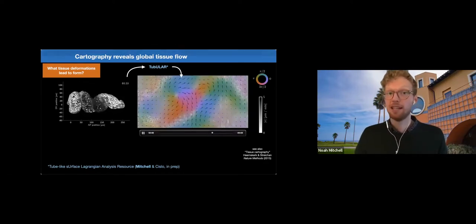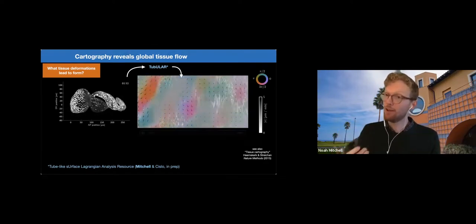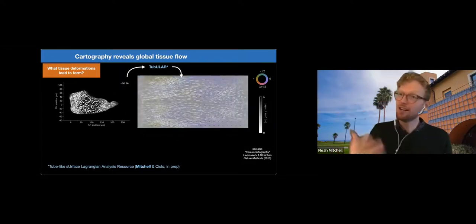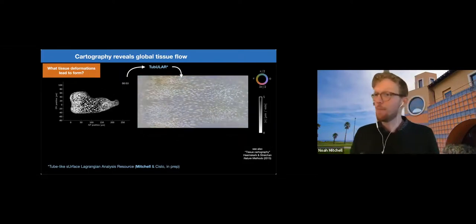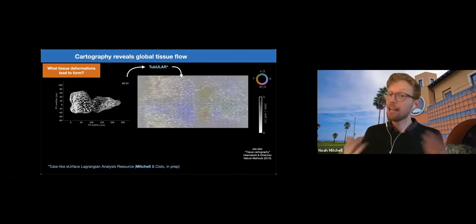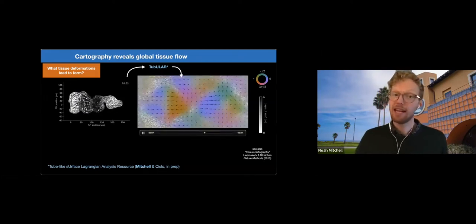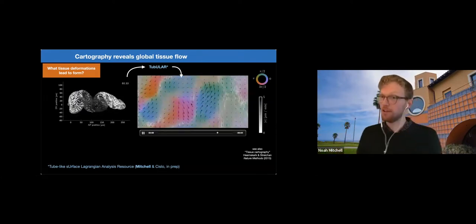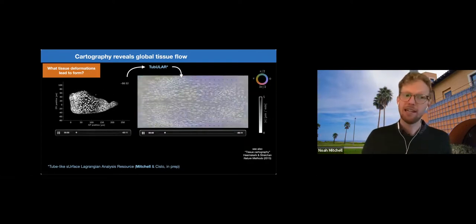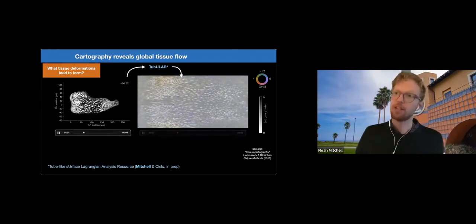Here, I'm plotting the tangential component of that flow field with the orientation in color and the magnitude in opacity. And we can ask, how do these in-plane tissue velocities, these complex swirls that arise, relate to the out-of-plane deformations we see on the left, these constrictions?